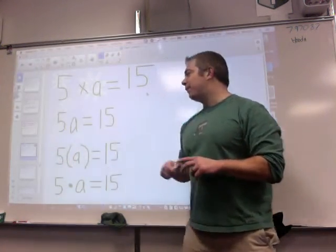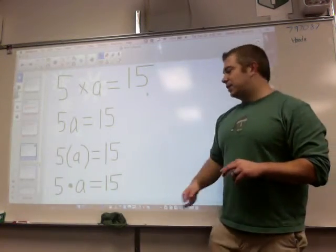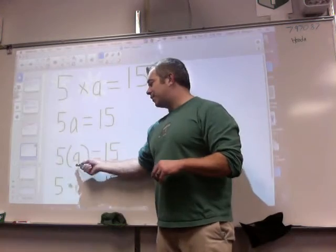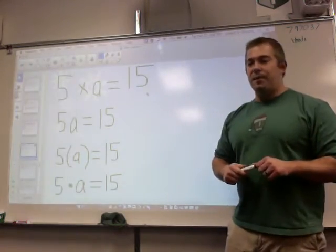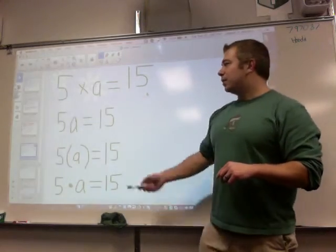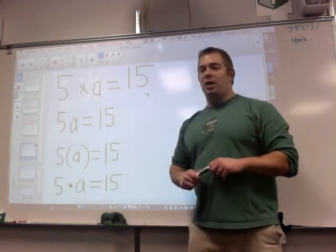So 5 times a will equal 15. If I have parentheses with no operation sign, it's 5 times whatever is inside the parentheses, which is a. And this dot right here also stands for multiplication. So there's four ways to show a multiplication problem as of now.